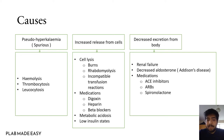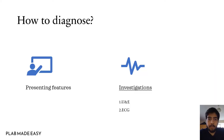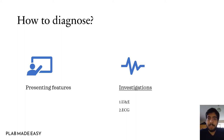How will you diagnose hyperkalemia? The first approach is with presenting features, but many patients can present without any features. You'll go for U&Es — urine electrolytes — as investigations, and then you'll go for an ECG.